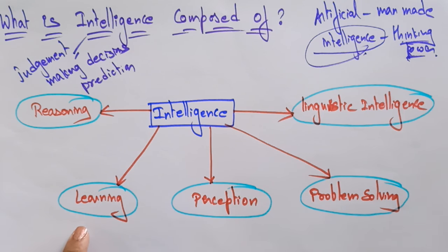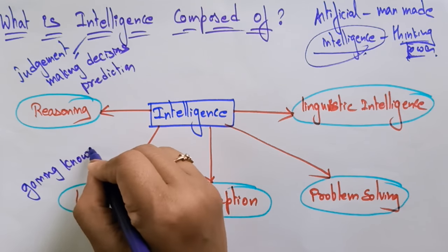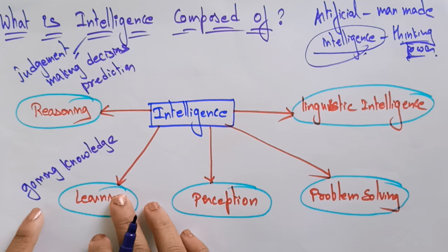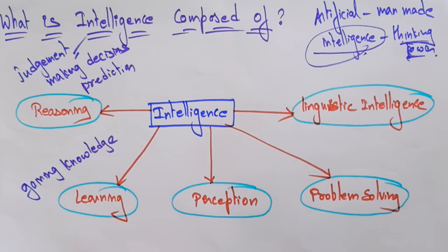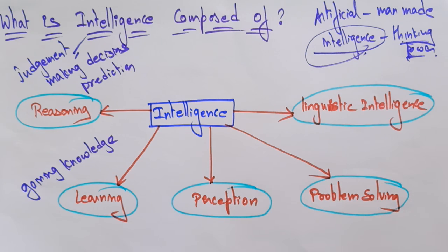Now coming to another component: intelligence is composed of learning. Learning is an activity of gaining knowledge. You gain knowledge by studying, practicing, experiencing something, or learning different skills. In that way you gain your knowledge, so intelligence is composed of learning because with the help of learning you can gain knowledge.